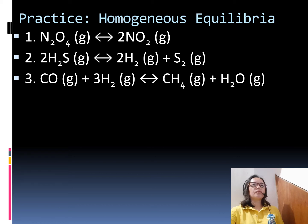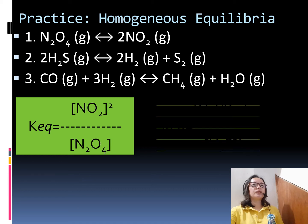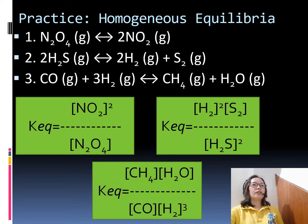Here are additional examples of homogeneous equilibria. For the first equation, the expression is product over reactant. For the second equation, we have hydrogen and sulfur in the numerator, and hydrogen sulfide raised to the second power as the denominator. For the last one, we have methane and water over carbon monoxide and hydrogen raised to the third power. Again, all these are examples of homogeneous equilibria.